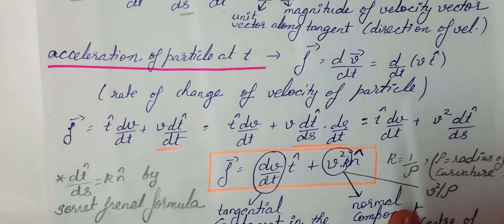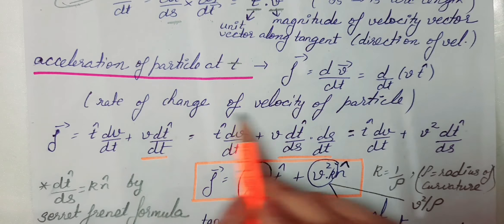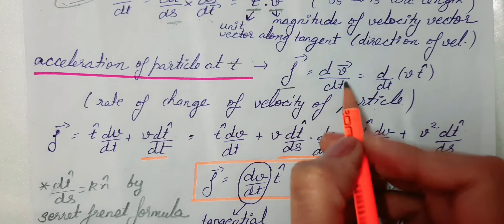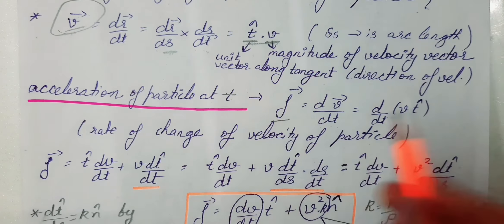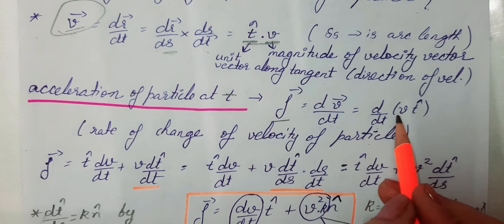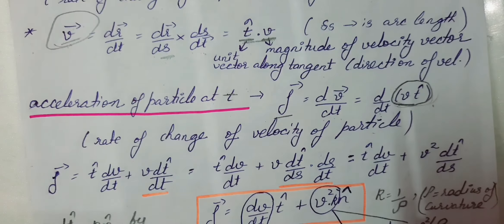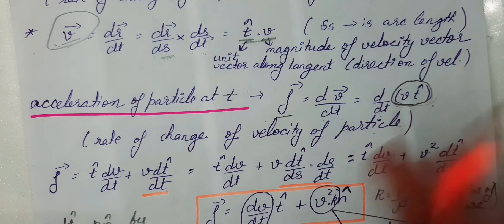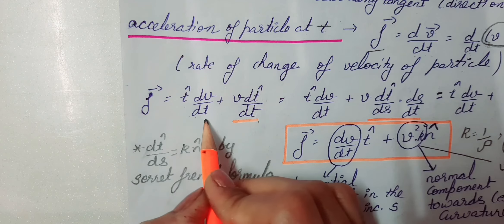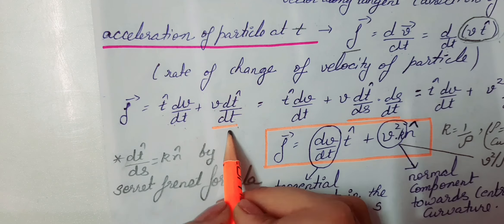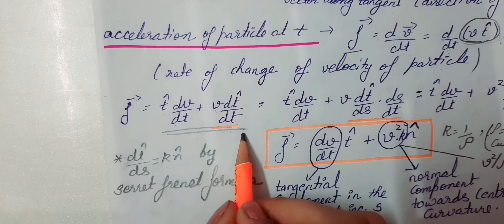Next हम देखते हैं acceleration of a particle at any time T. Acceleration क्या होता है? Rate of change of velocity of a particle होता है। Hence acceleration का formula है dV/dt. अब dV/dt = d(V · T̂)/dt, मतलब derivative of V into T̂. यहाँ दो functions का product है, तो product rule लगेगा differentiation का। First as it is, second का differentiation; फिर first का differentiation, second as it is। So by product rule: dV/dt = (dV/dt)T̂ + V(dT̂/dt).